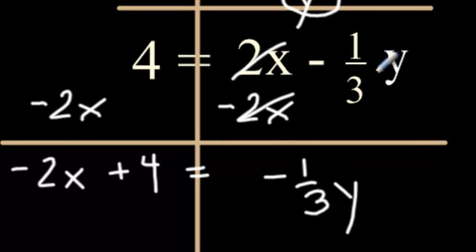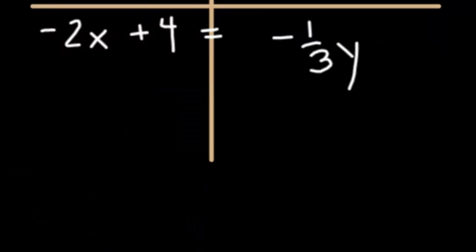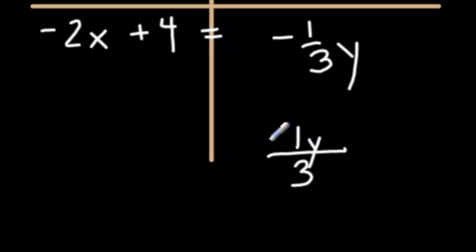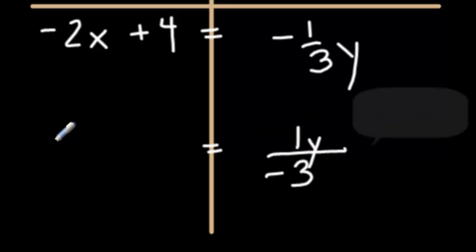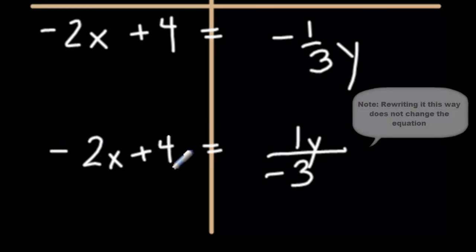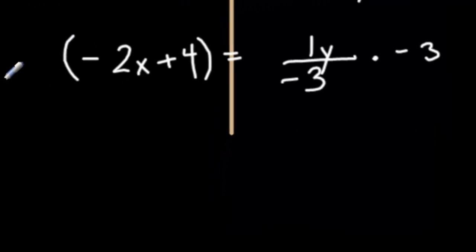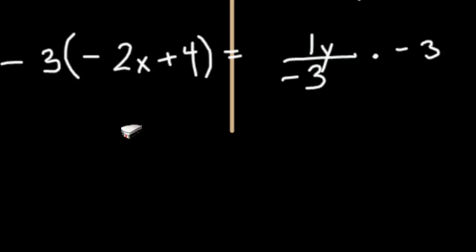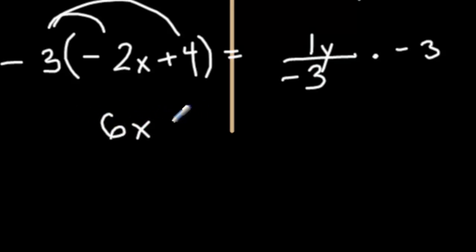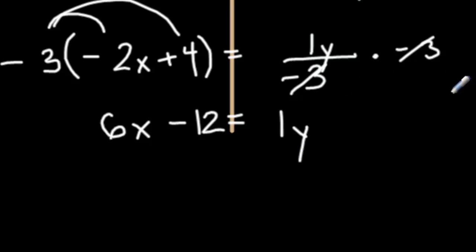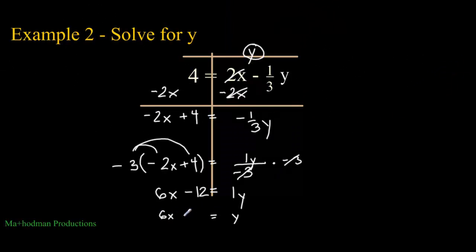Here's a little trick for you. If you want to rewrite a negative one-third y, there's an easier way. You can put all the variables on the numerator by writing it as 1y over 3. You also have a choice to put the negative on the top or bottom — it would be easier to put it on the bottom in this case. Let's get rid of this negative 3 by multiplying by negative 3 on both sides. Since those are 2 terms, you have to put them in parentheses. Distributive property: negative 3 times negative 2x is 6x. Negative 3 times 4 is negative 12. On the right, the negative 3 cancels out. I'm left with y equals 6x minus 12.